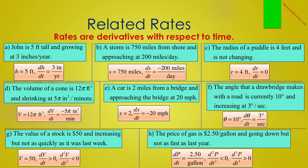H is trickier yet. The price of gas is $2.50 per gallon and going down, but not as fast as last year. Since you are given the price in terms of dollars per gallon, you're given a rate of change, which is dp/dt, which is $2.50 per gallon. If you are told that this price is going down, that is the change in dp/dt, which is the second derivative, meaning d²p/dt² is less than 0.